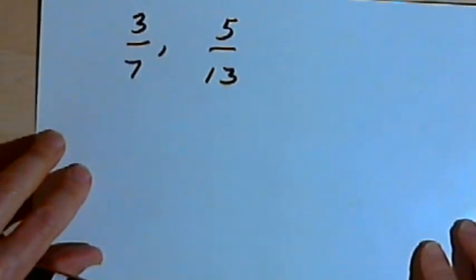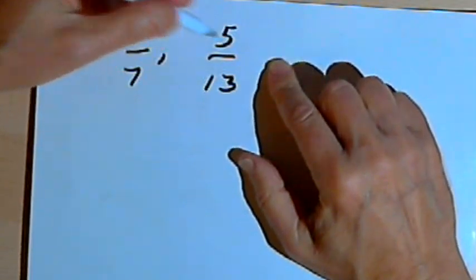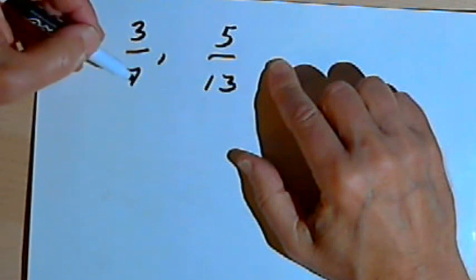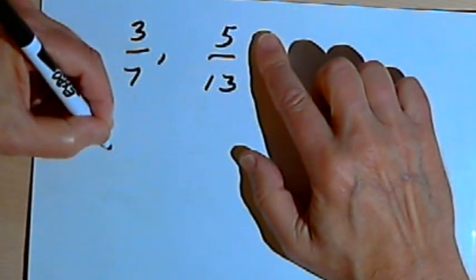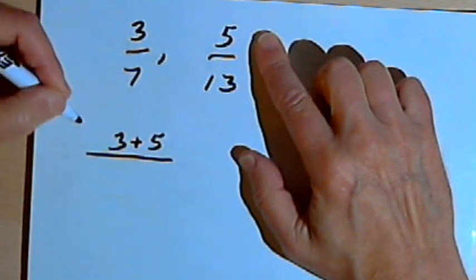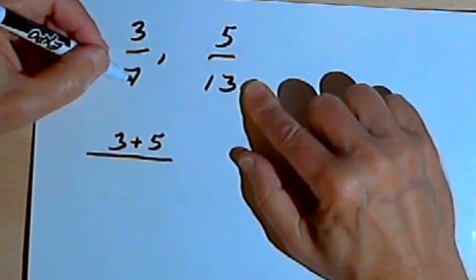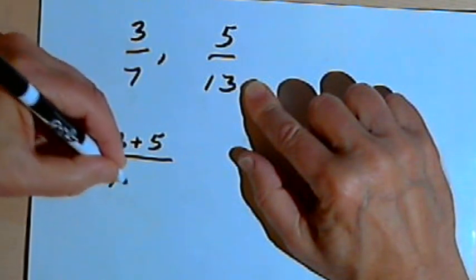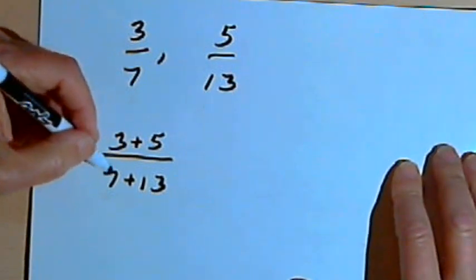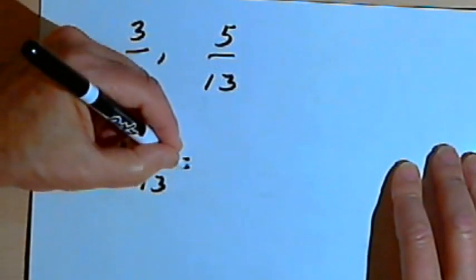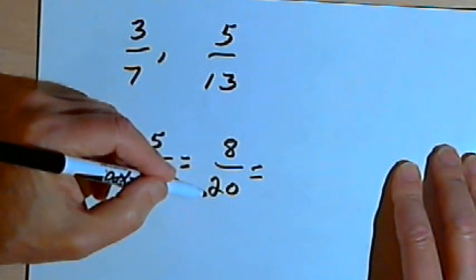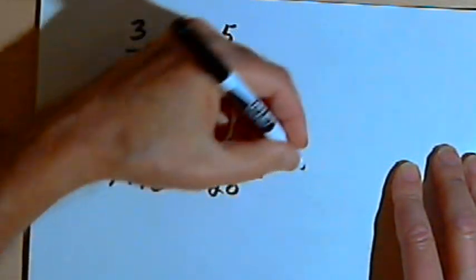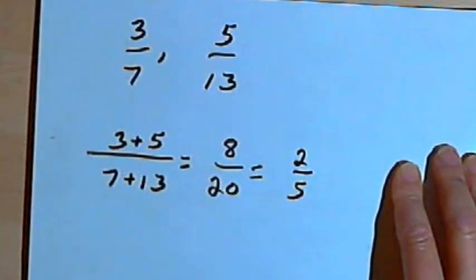Now here's the second method. This method is nice if all you need to do is find one fraction in between two fractions. So I've got 3 over 7 and 5 over 13. The method goes like this. Add the two numerators together. So I'm going to have 3 plus 5. That will be the new numerator. Add the two denominators together, 7 plus 13. So I've got 3 plus 5 over 7 plus 13. Let's do the adding. That's going to be 8 over 20. Now I'll reduce 8 over 20. I can divide both the numerator and denominator by 4. So that's going to be 2 over 5.